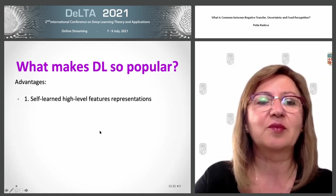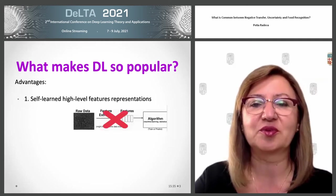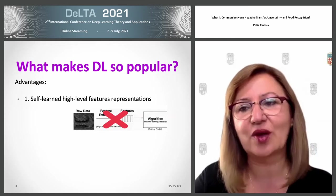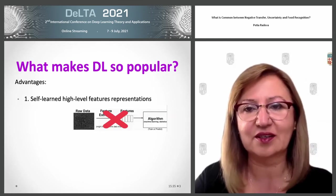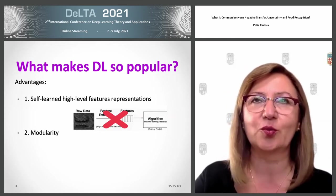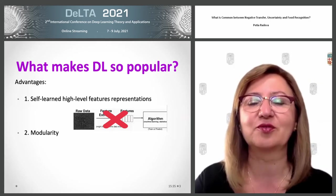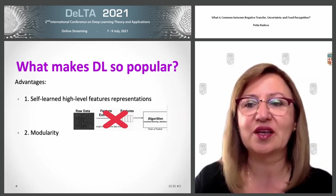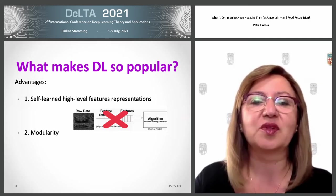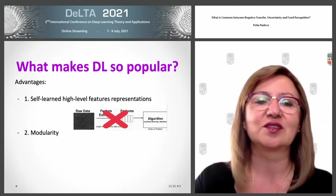One of them could be the self-learning high-level feature representation — that is, we have end-to-end learning systems. We don't need to bother about what kind of information we should extract from the images in order to give to the classifier.